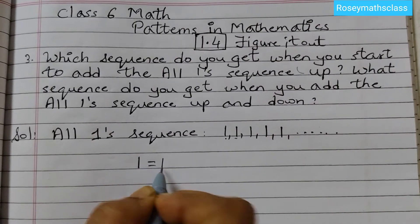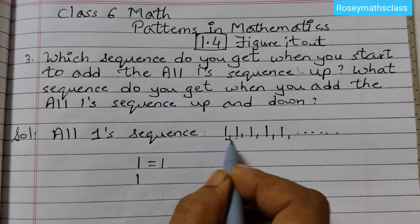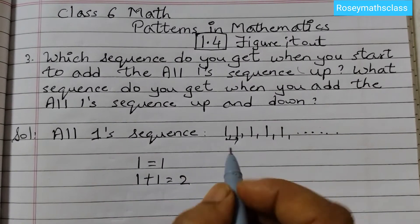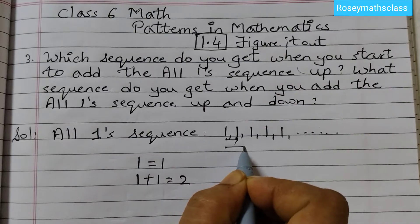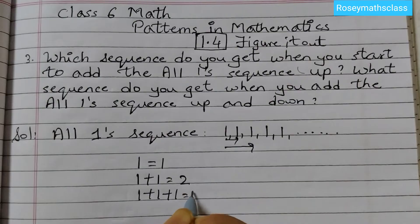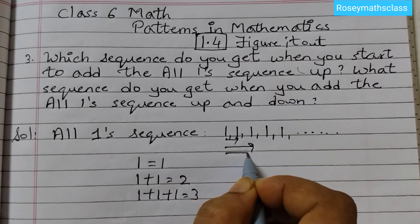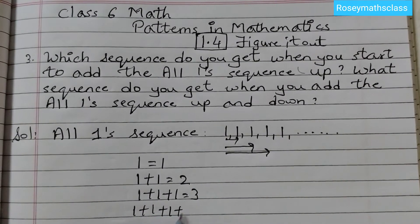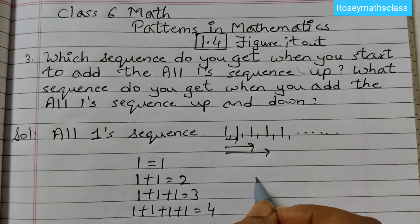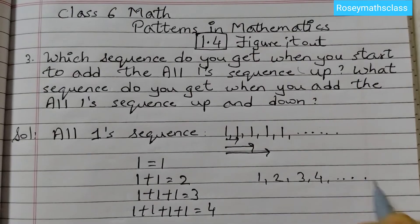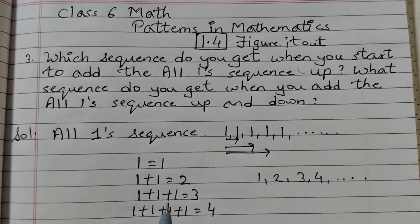Starting from the first position: 1 equals 1. Next, go till here: 1 plus 1 equals 2. Starting from here going up: 1 plus 1 plus 1 equals 3. Again start from here and move up — 4 times 1, so 1 plus 1 plus 1 plus 1 equals 4. So what do we get? We get 1, 2, 3, 4 and so on.